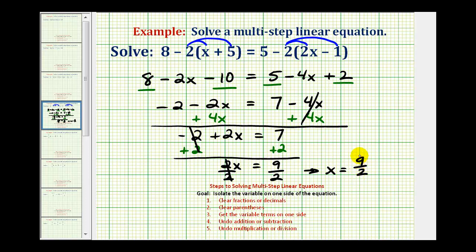Now, this is an improper fraction, but it is in simplest form. If we want to convert this to a mixed number, we would divide nine by two. There are four twos in nine, four times two is eight, with a remainder of one, which means nine halves is equal to four and one half.